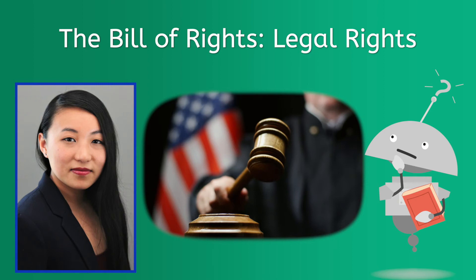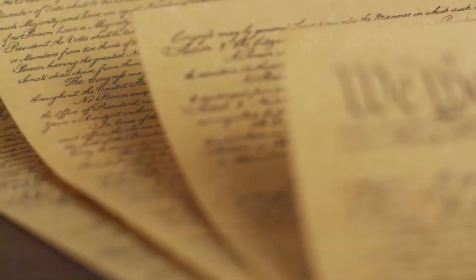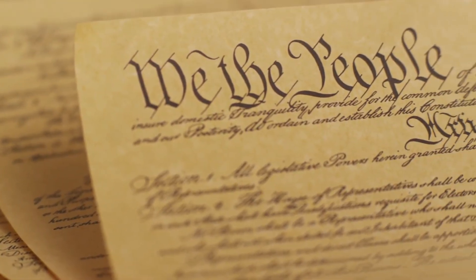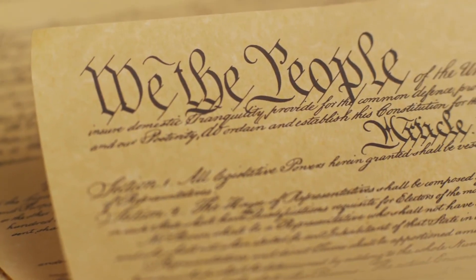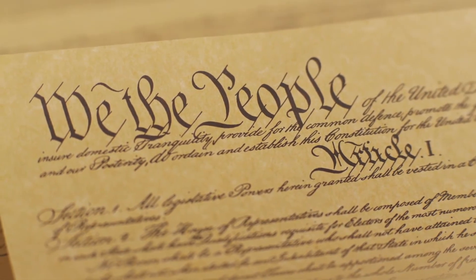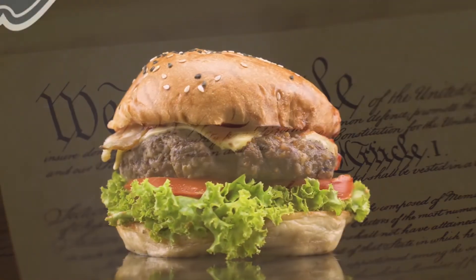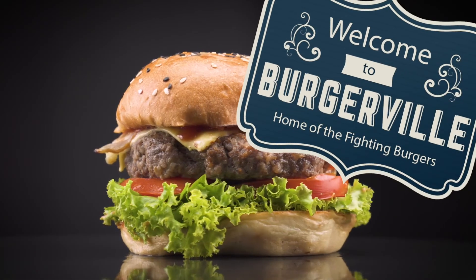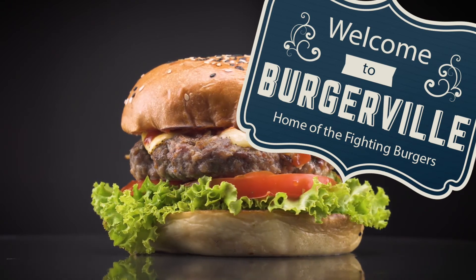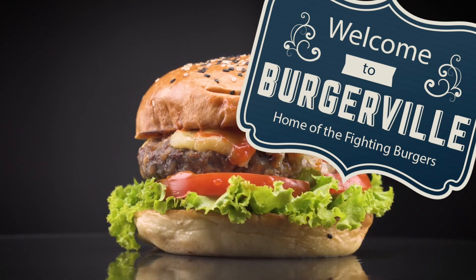Hello again, my name is Caroline. In the last lesson, we discussed the first category of rights laid out in the Bill of Rights, known as Civil Rights and Liberties. These make up the first three amendments of the Bill of Rights. We also stepped back into Burgerville for the first time in quite a few lessons. Let's go back there for a moment, shall we?